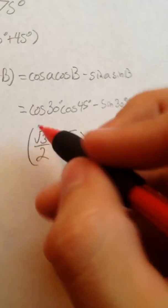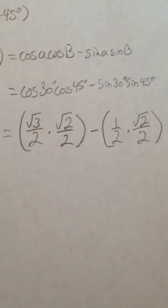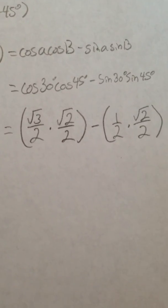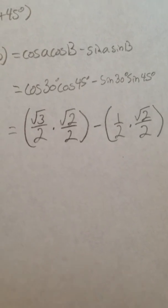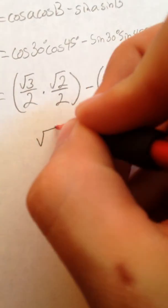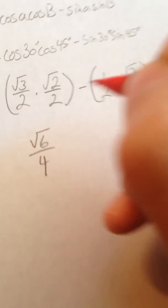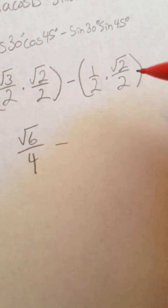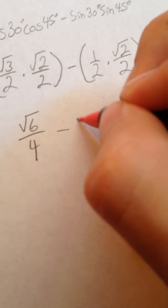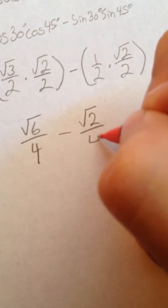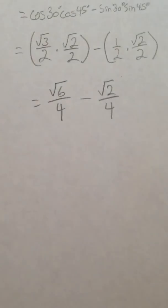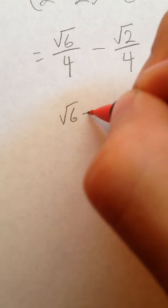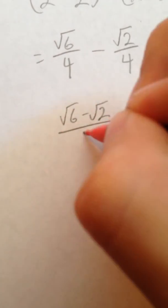Now we're going to simplify this equation by multiplying √3 over 2 times √2 over 2, which gives us √6 over 4, minus 1/2 times √2 over 2, which gives us √2 over 4. You can simplify this further to get √6 minus √2 over 4.